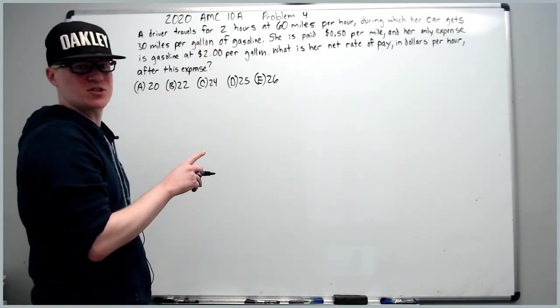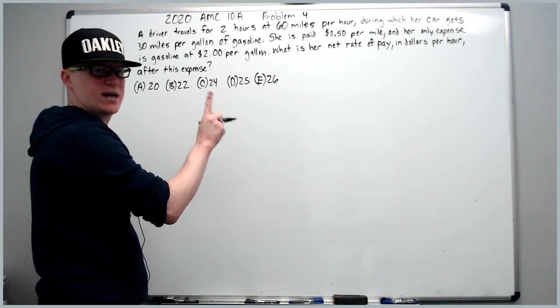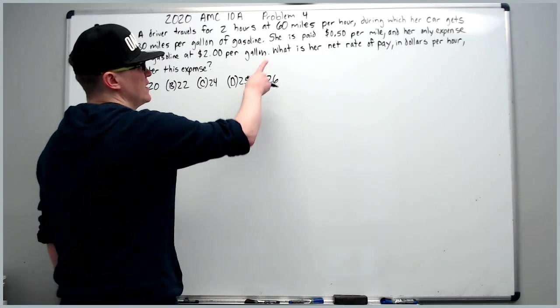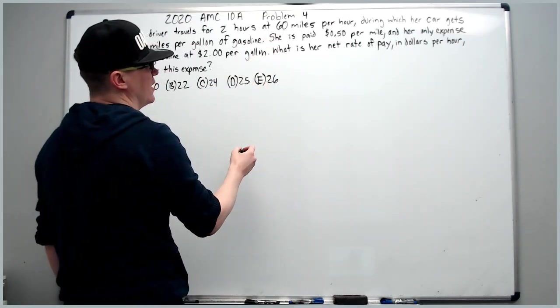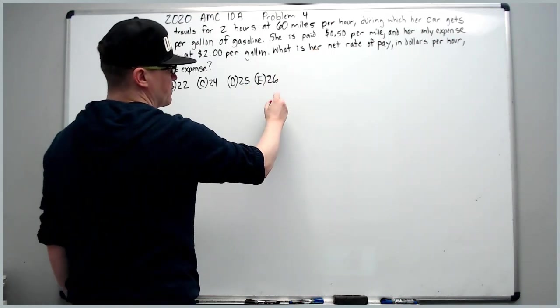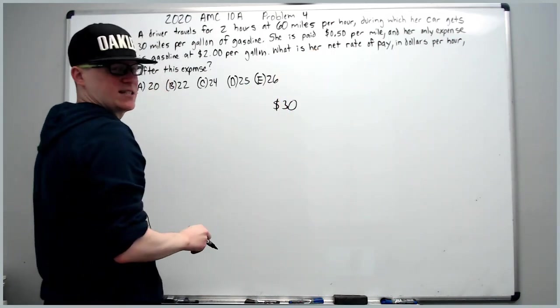So dollars per hour, we don't care she's traveling for 2 hours. Let's just do 1 hour and we'll get the correct rate, because it's the same for both hours. At 60 miles per hour, she's going to go 60 miles, and she gets paid 50 cents per mile, so half of 60 is $30.